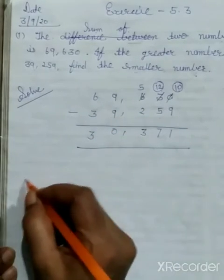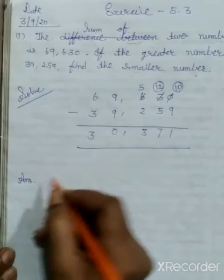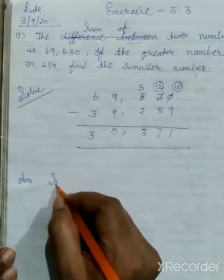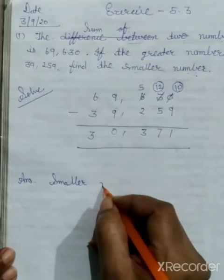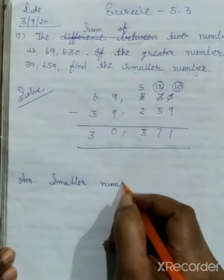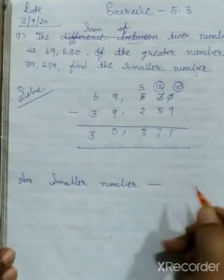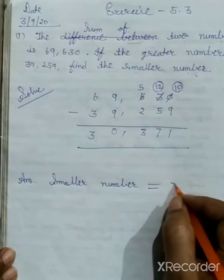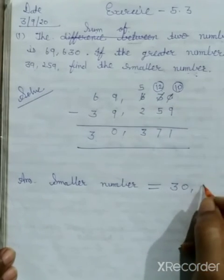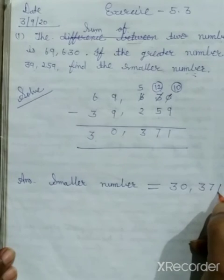For the answer we will write: smaller number. The smaller number is 30,371.